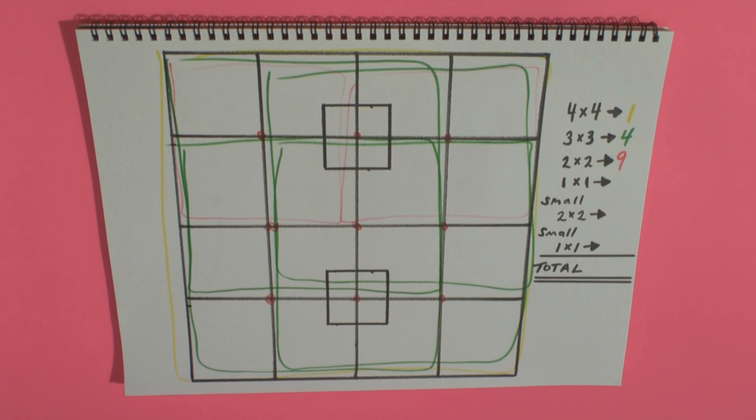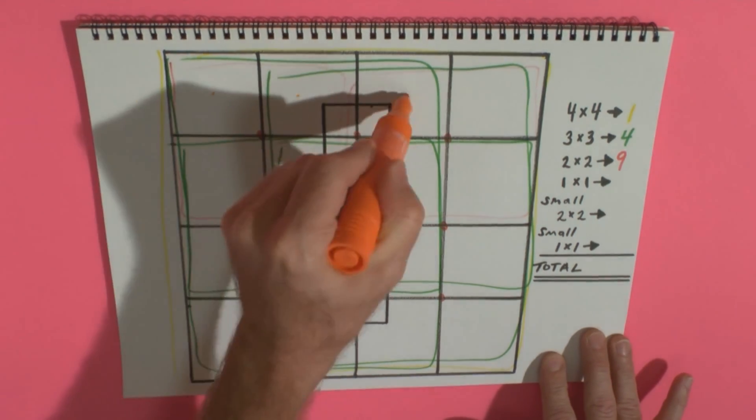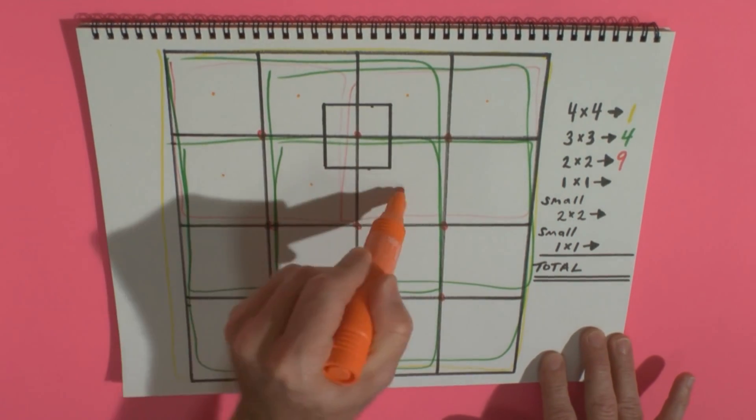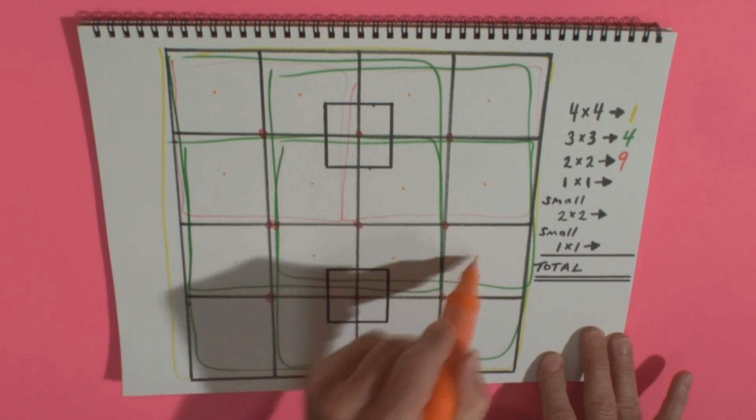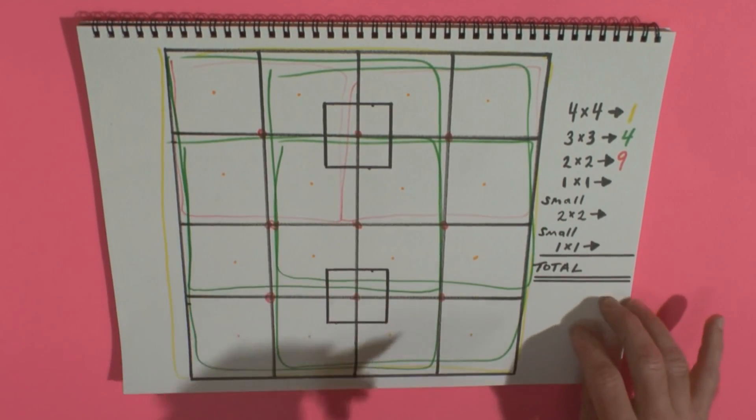And next, the one by one squares. Pretty easy. These are just, you just go around like that. You can count each of these up. Pretty simple. Four times four. Sixteen of these guys.